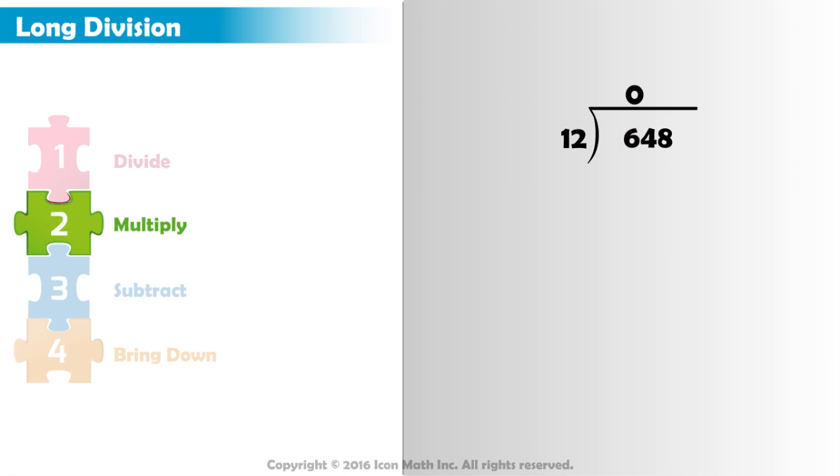Now we multiply. 0 times 12 equals 0. We write a 0 below the 6. Then we subtract. 6 minus 0 equals 6. Then we bring down the next digit from our dividend. Bring down the 4.